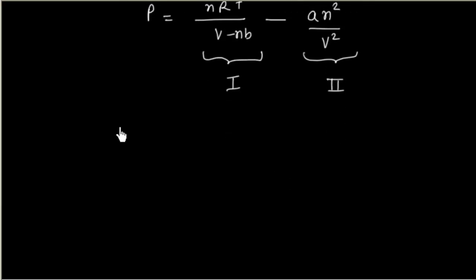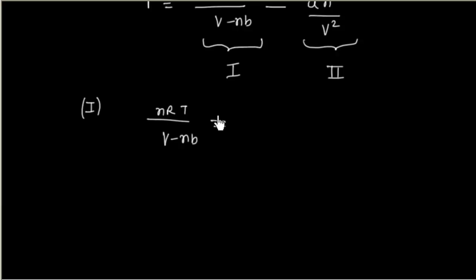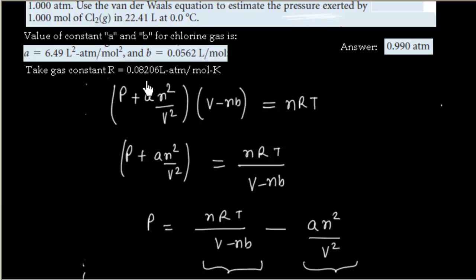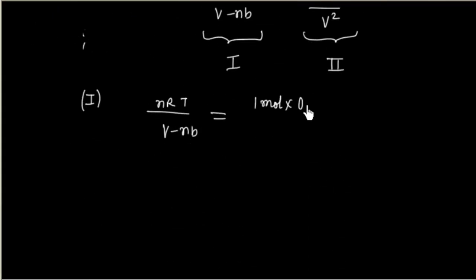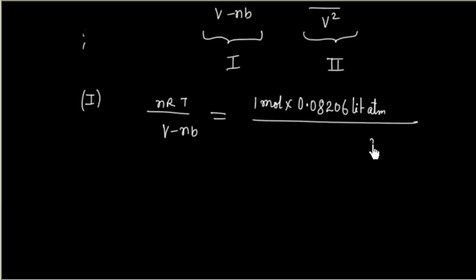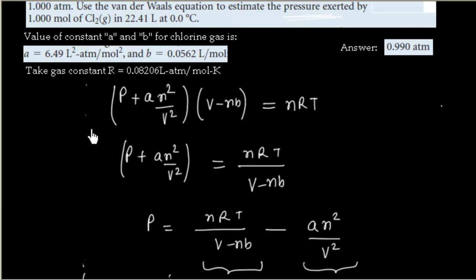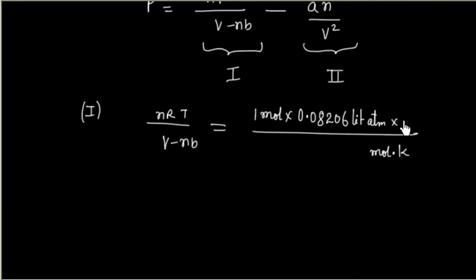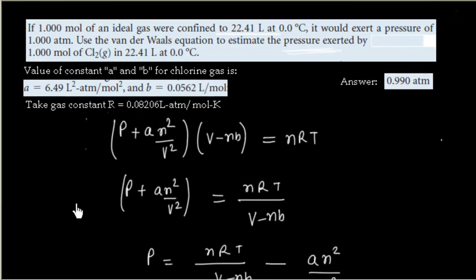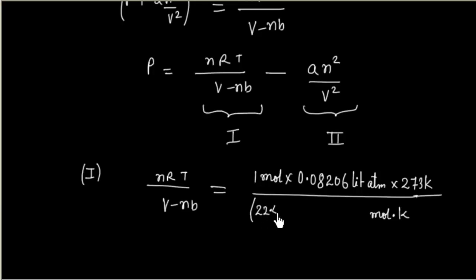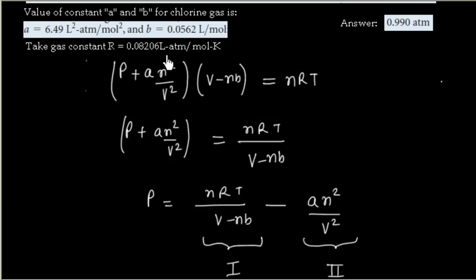Let us do the calculation for the first term, NRT divided by (V - NB). N is the number of moles — the question says 1 mole of chlorine gas. R value is given as 0.08206, with units of liter·atm per mol·K. Temperature is 273 Kelvin. Volume is given as 22.41 liters, and B value is 0.0562.